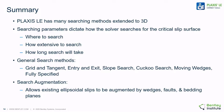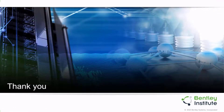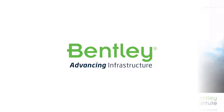In summary, Plaxis LE has many searching methods implemented in 3D. The searching parameters dictate how the solver searches for the critical slip surface in terms of where to search, how extensive the search will be, and how long it will take. The analysis time is essentially tied to how many trial slip surfaces are explored. We've covered grid and tangent, entry and exit, slope search, cuckoo search, moving wedges, and fully specified methods, as well as how search augmentation allows augmenting of 3D slip surface shapes through weak planes such as wedges, faults, and bedding planes. Thank you for your time — this concludes the video on 3D searching methods.